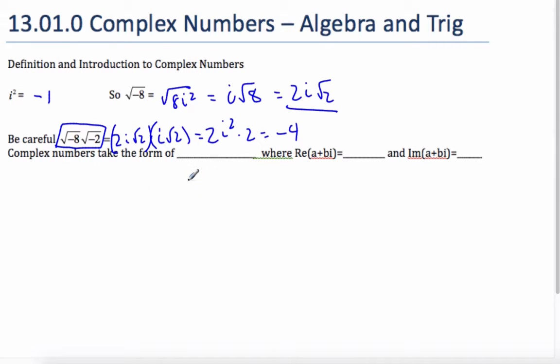So complex numbers take the form of a plus bi. They can have, and where the real part is a, that's the real part, and the imaginary part is b, this number here, b, and both these values are real numbers. Together, you put an i on there, and you get complex numbers.